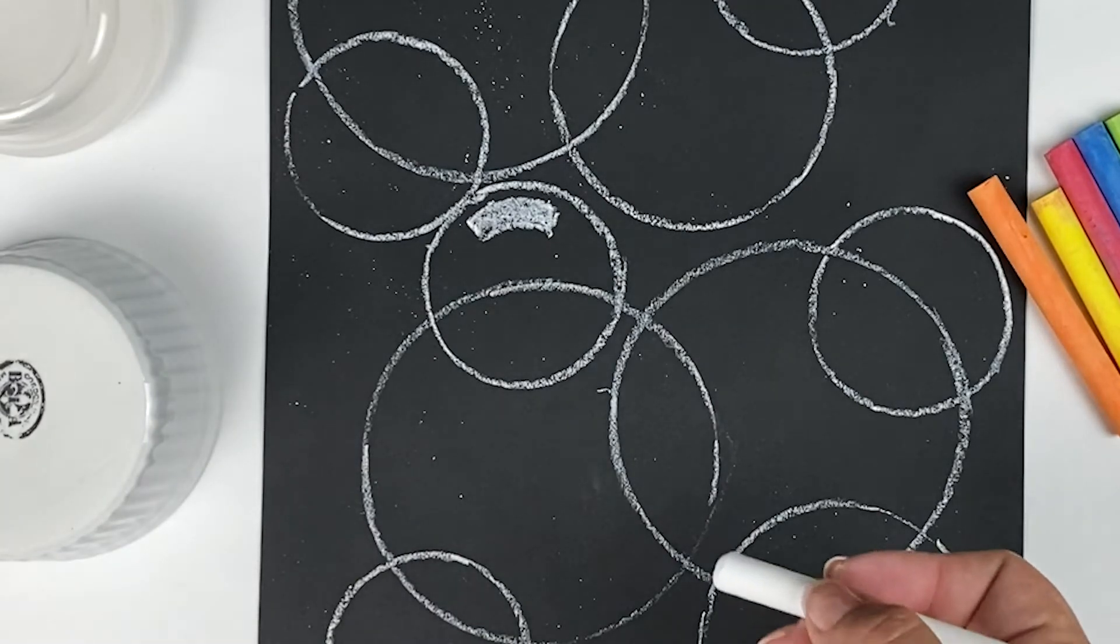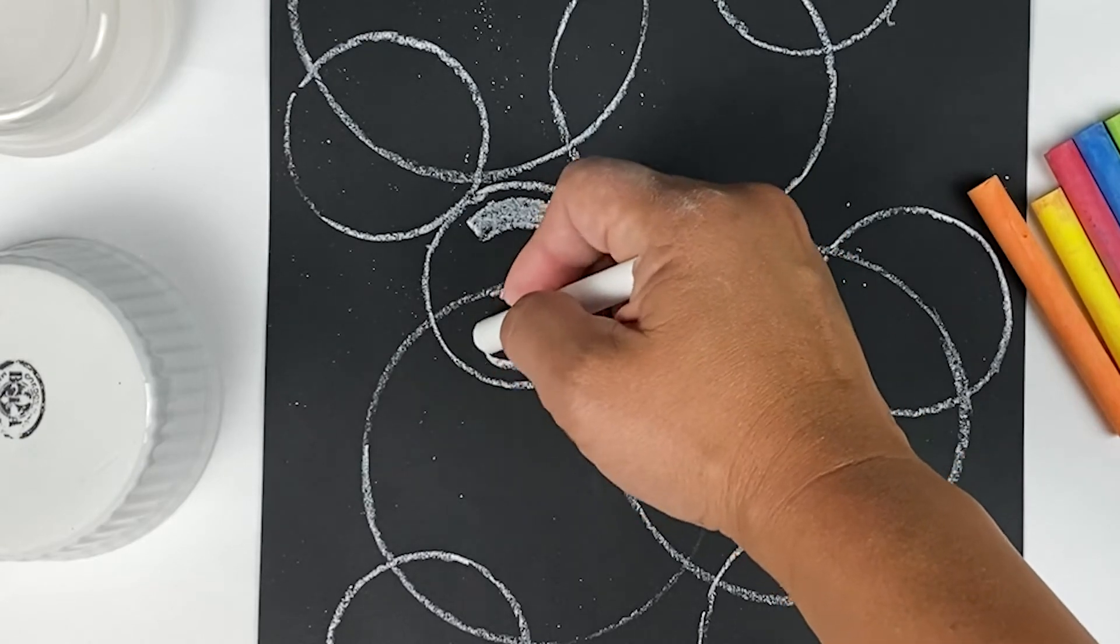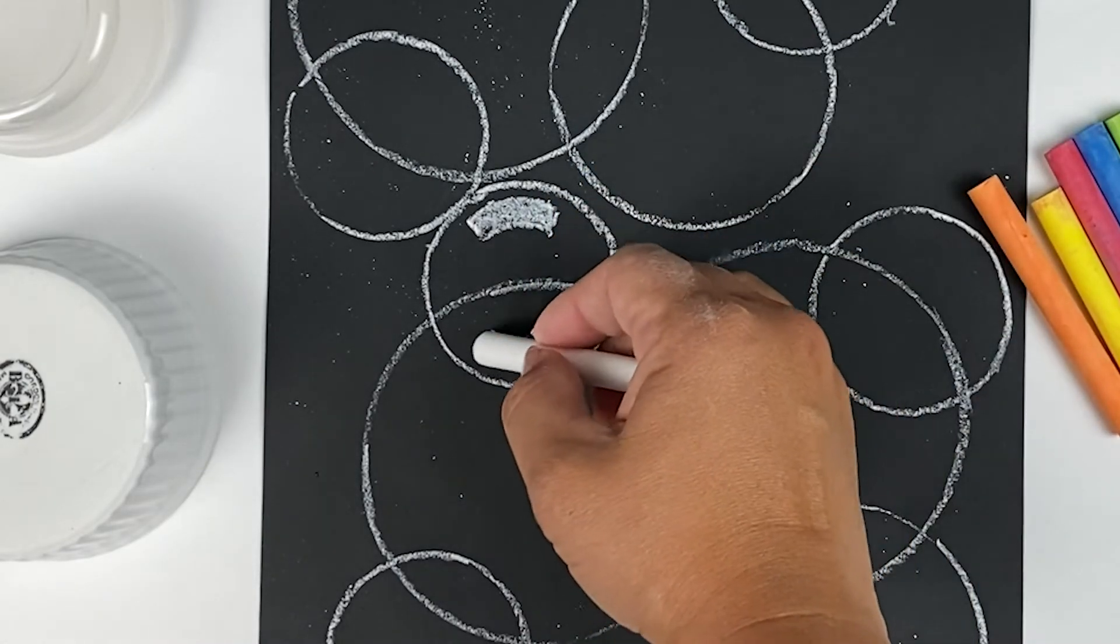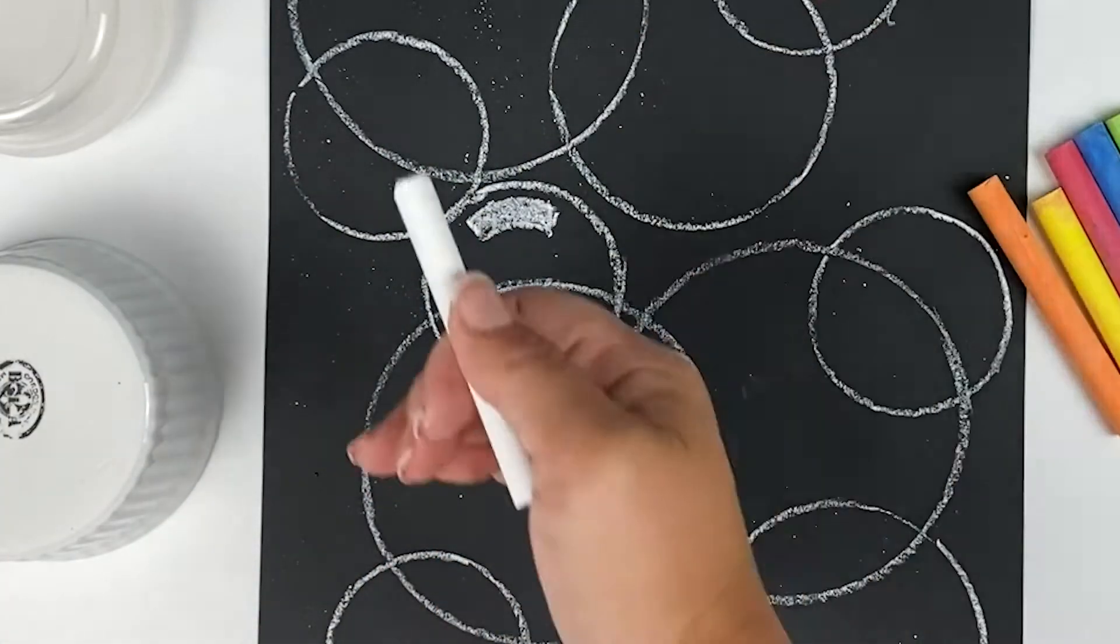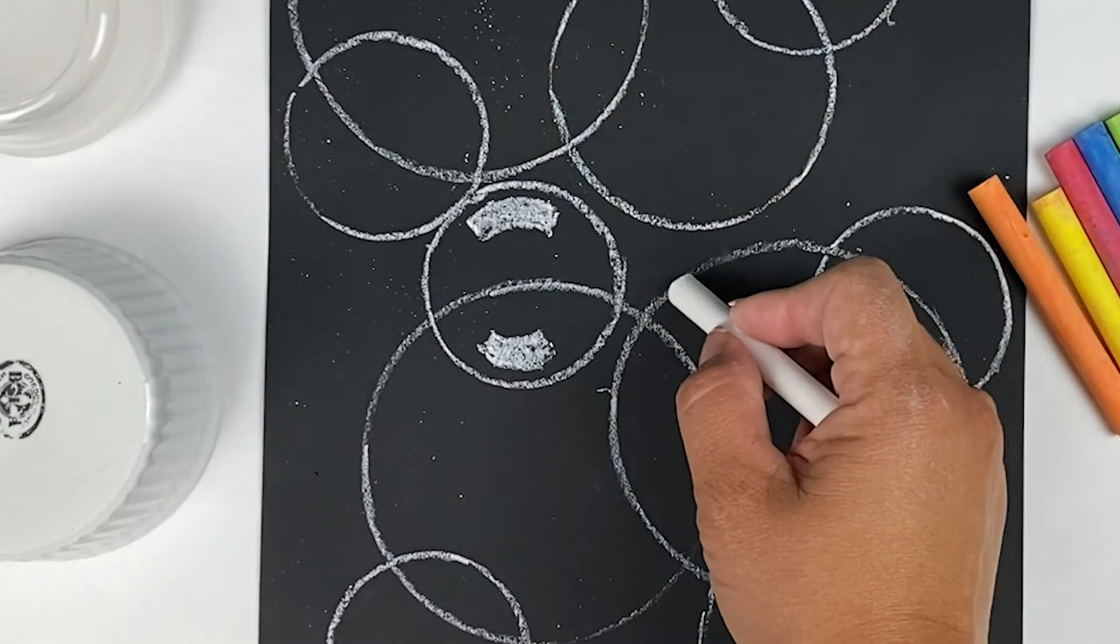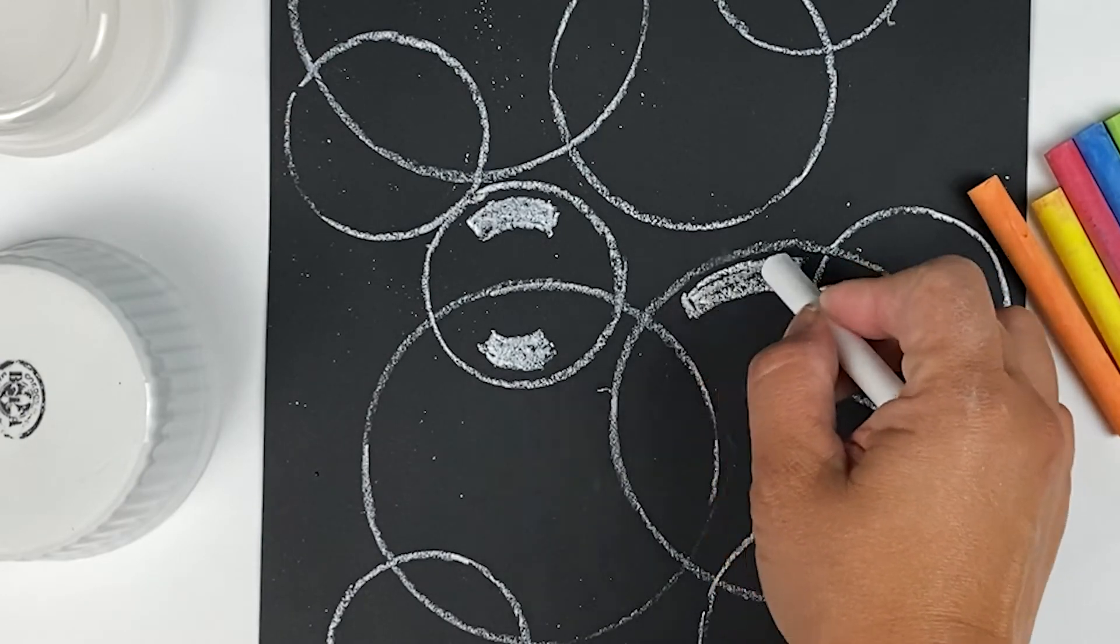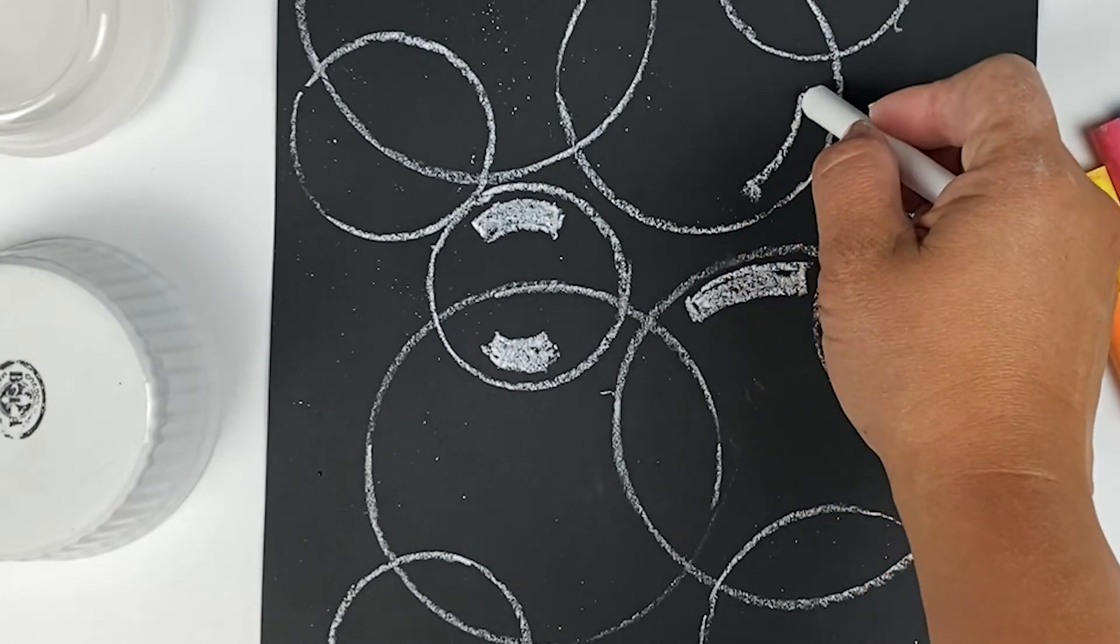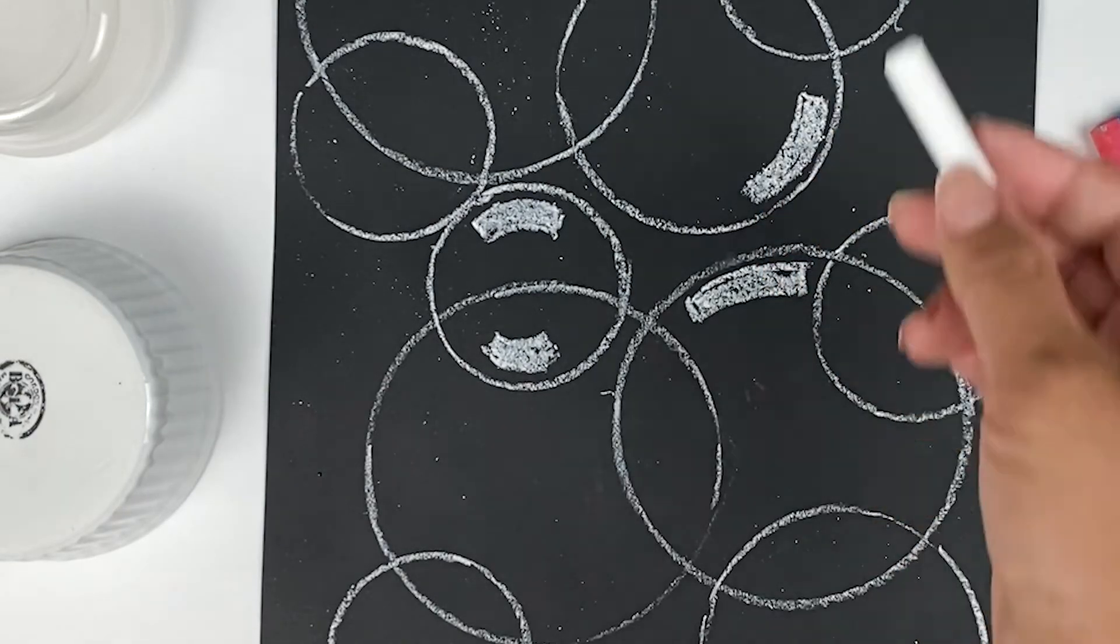And we're just going to do this in different places, just following the curve of your bubbles and filling it in. And because you're working with chalk, try not to lean your hand on your paper because it'll start smudging it. So you just kind of lift your hand above it a little bit. And that will help. And just in different places, put a highlight here. And you can even go the other way. And just keep going.